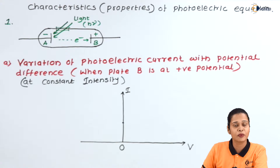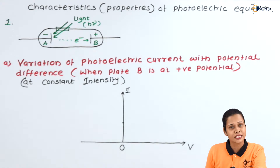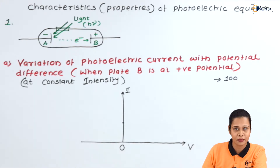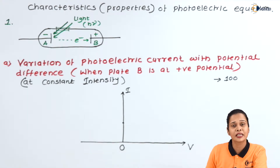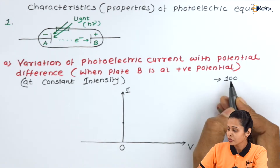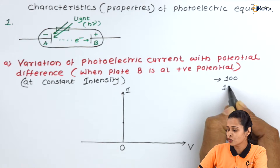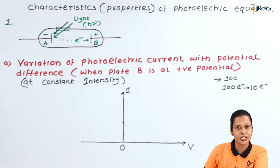We are increasing the positive potential of metal plate B. When we increase the positive potential of metal plate B, there will be more attraction and electrons will be attracted towards metal plate B. With intensity constant, say there are 100 photons incident on metal plate A. Ideally, there is emission of 100 electrons since one photon gets absorbed by one electron. When the positive potential of plate B is low, only 10 electrons out of 100 will reach plate B, giving current due to 10 electrons.